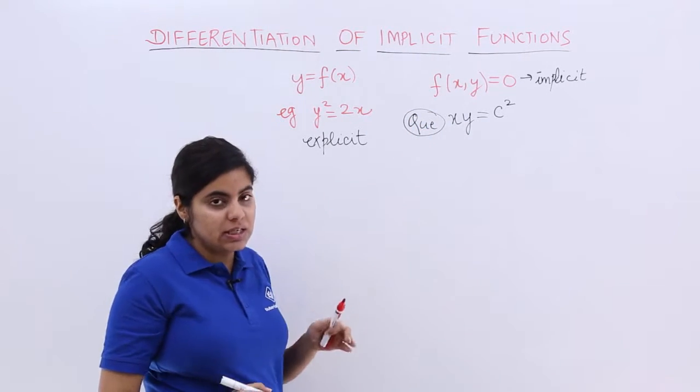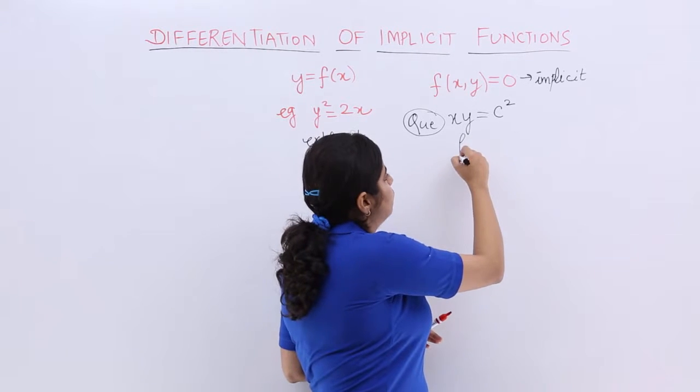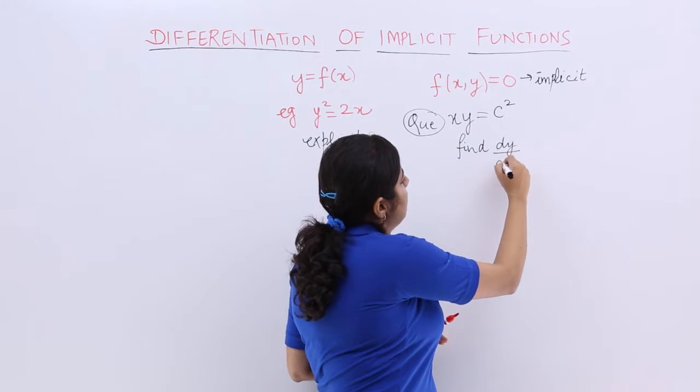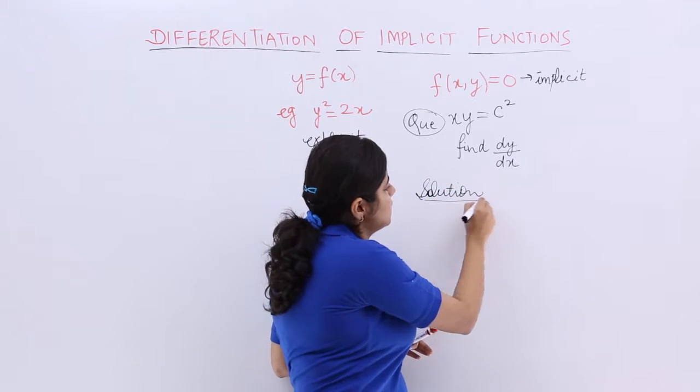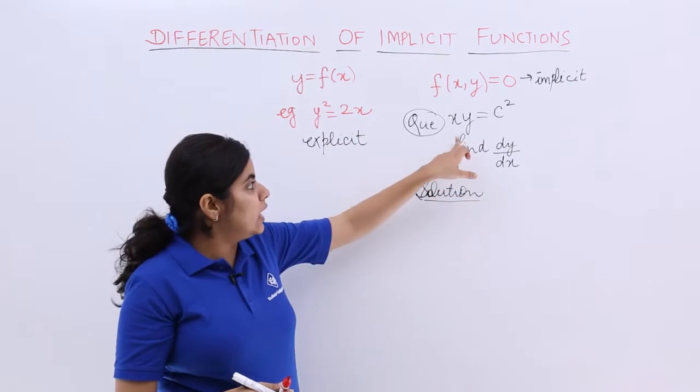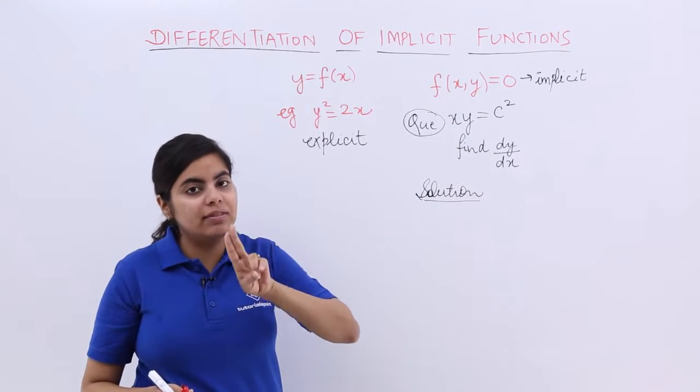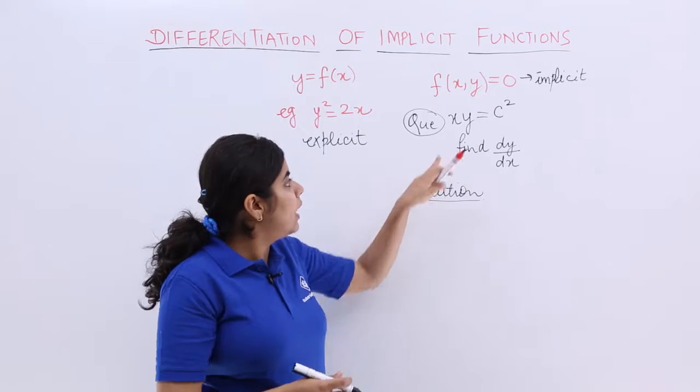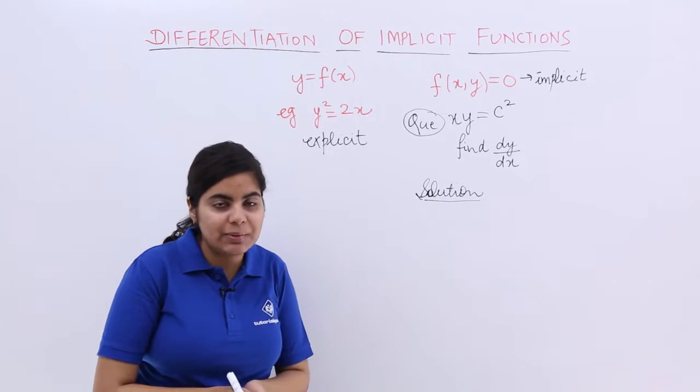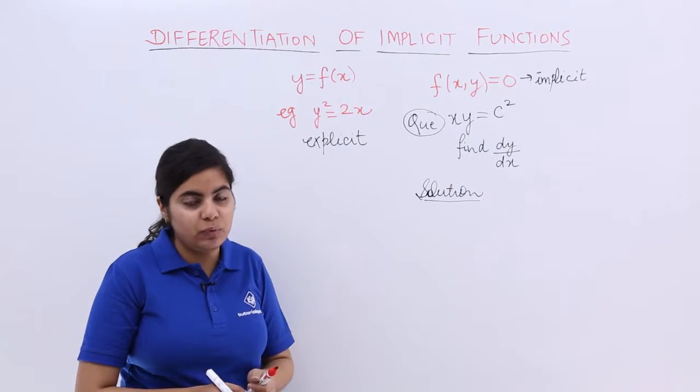This question as you see is asking you to find dy by dx. So how would we do the solution? That is the problem given to us. I would like to tell you that x and y are given and they are in the product form. They are multiplied together.